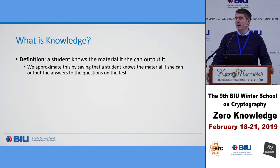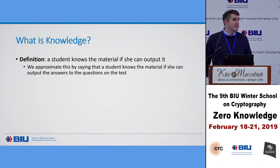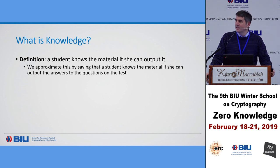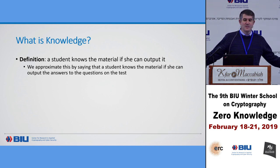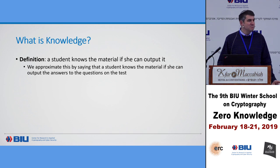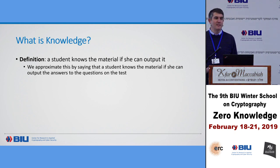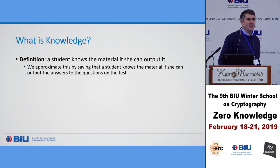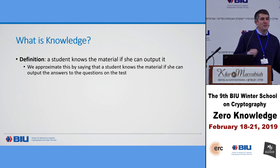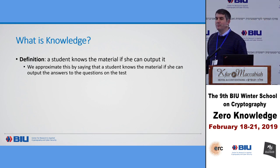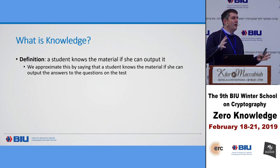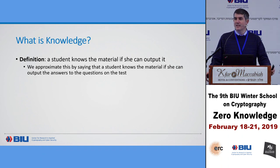The first question we must ask before defining what a proof of knowledge means is: what does 'knowledge' mean? We work in universities and test knowledge. We say that a student knows something if they can output it. We approximate this by asking questions in an exam and having students output the answers. If we wrote a good enough exam — a random sample of the material — and the student can output that with high probability, then we assume the student knows the material. Knowledge is about output.